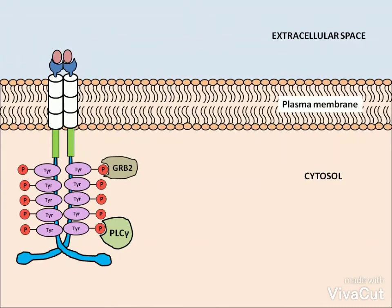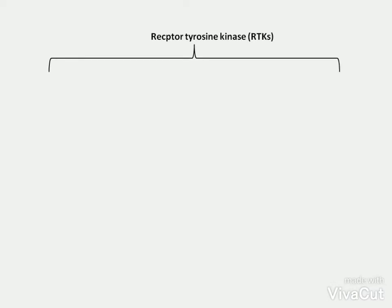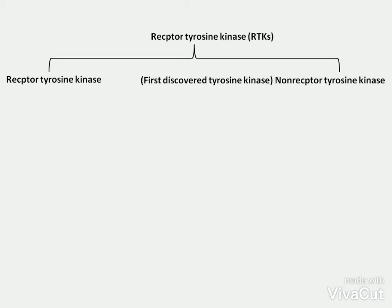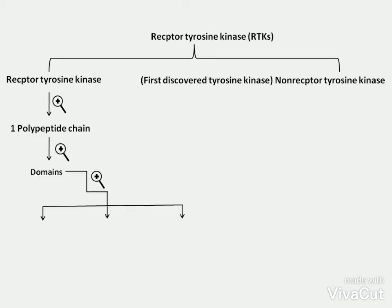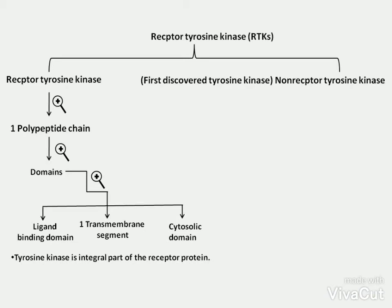Now we will discuss the types of receptor tyrosine kinase. There are two types: receptor tyrosine kinase and non-receptor tyrosine kinase. Receptor tyrosine kinase was the first discovered tyrosine kinase and often consists of one polypeptide chain with multiple domains, including a ligand binding domain, one transmembrane segment, and one cytosolic domain. The tyrosine kinase is an integral part of this receptor protein. In contrast, non-receptor tyrosine kinase contains two separate proteins: a receptor protein and a tyrosine kinase.